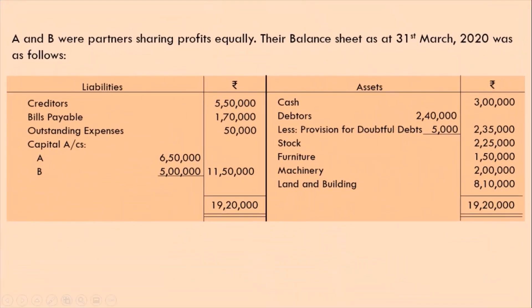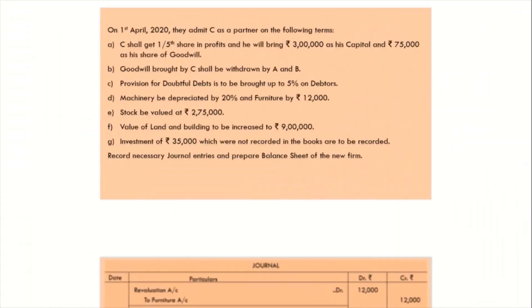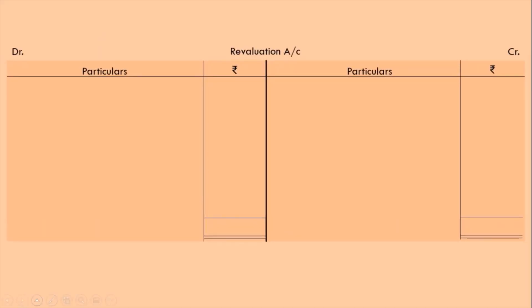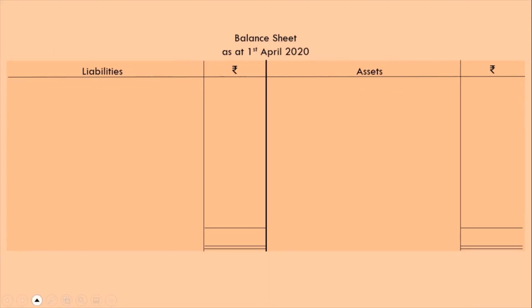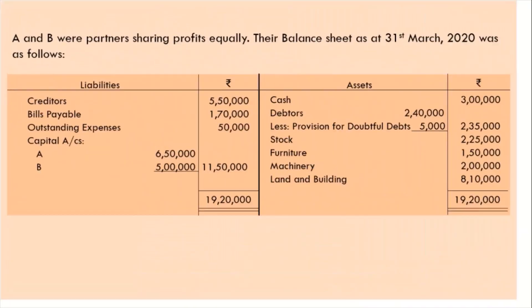Ready? Ok, now let me take you to every page so that you can have a general idea of what we are going to do. On the first page we have our question, then on the second page we have our adjustments — also part of the question. Then the third page is a blank one where we will prepare our working notes. Then on the fourth and fifth pages we have the format of journal entries, then the format of the revaluation account, then the format of partners' capital account, then a format of cash account, and finally the format of our balance sheet. Now let's begin.